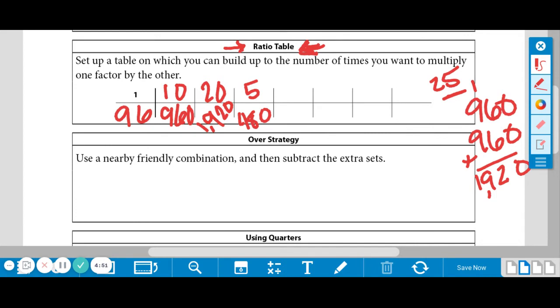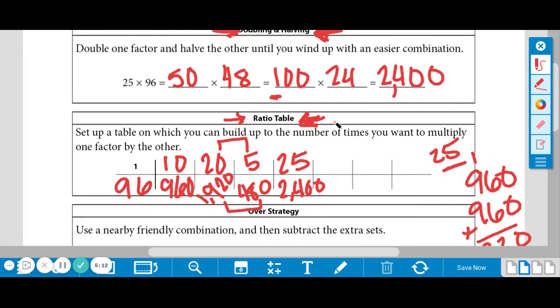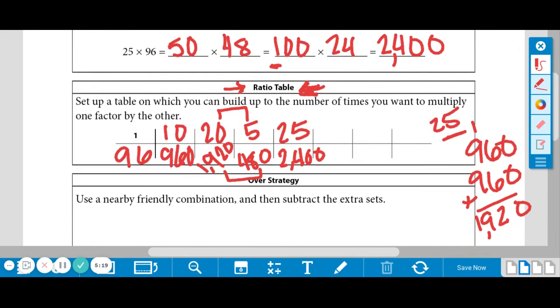Now I can combine these two to get 25. Combine the bottom two to get our answer 2,400. And I kind of went over into the next ratio table area, but that's okay, because we're done. So if we can compare, we have 2,400. And when we use the doubling, halving, we have the same thing.